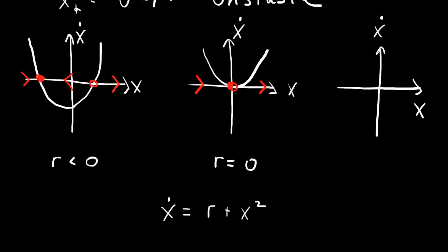When r is greater than 0, at x equals 0, x-dot is positive — the parabola has lifted off the x-axis and there are no fixed points. So in this saddle-node bifurcation, for negative r we have two fixed points: the negative one stable, the positive one unstable. As we vary the bifurcation parameter r, these two fixed points collide at the origin and disappear as x-dot lifts above the axis.